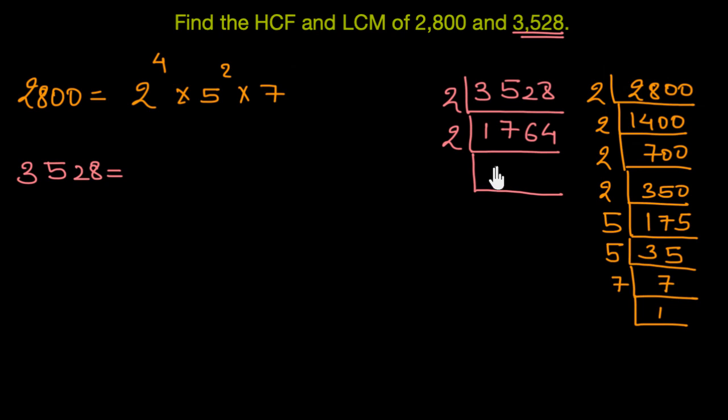So we would have 2 8s are 16. Again, 2 8s are 16. 2 2s are 4. 882. Let's divide this by 2 again. So we would have 441. Now, the sum of digits of this number is divisible by 3. So this number would be divisible by 3. So let's divide this by 3. 3 1s are 3. 3 4s are 12. And 3 7s are 21.